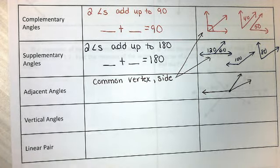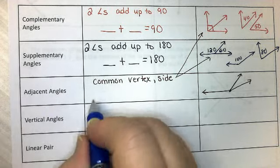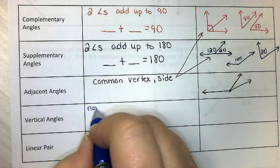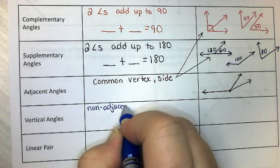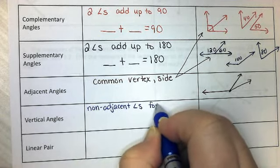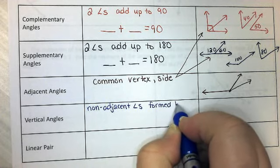Vertical angles. I'll give you the official definition, then I'll show you a picture. Vertical angles are non-adjacent, so they are not next to each other, non-adjacent angles formed by intersecting lines.